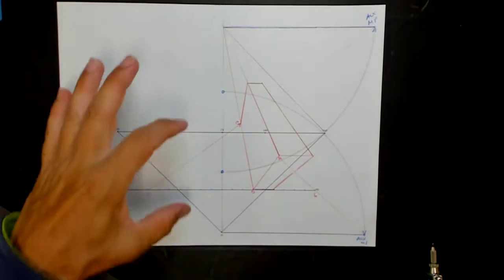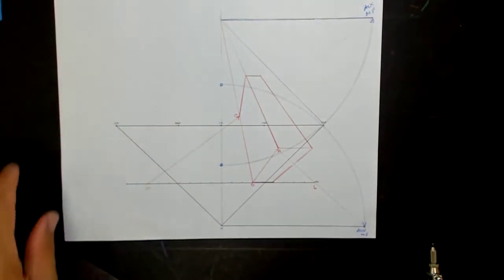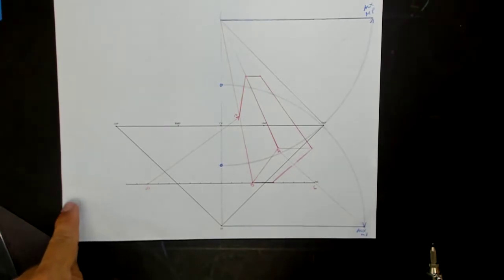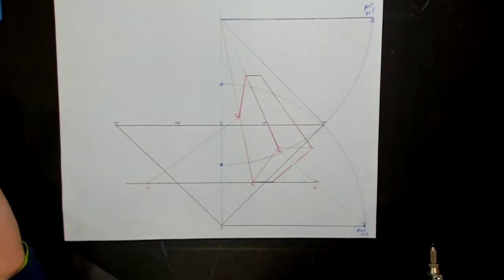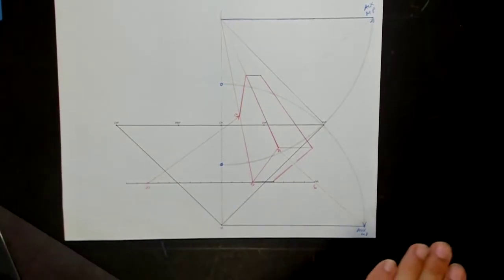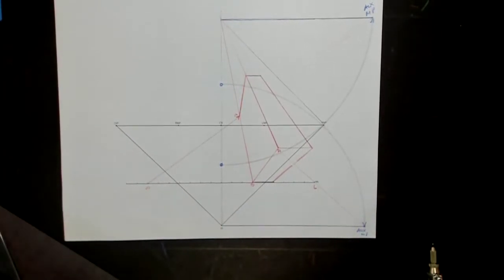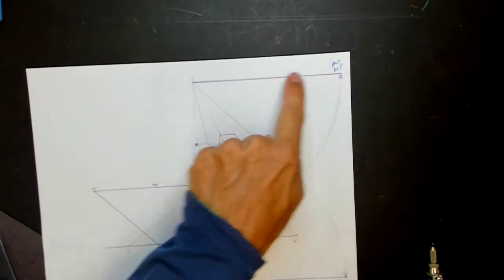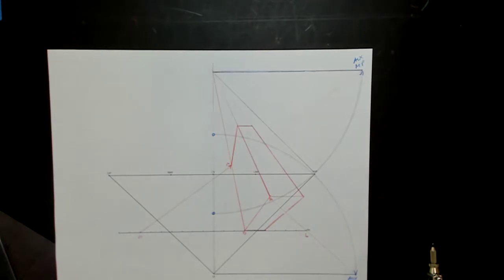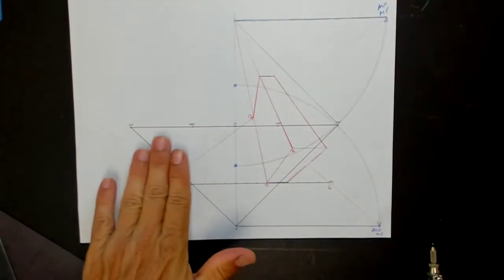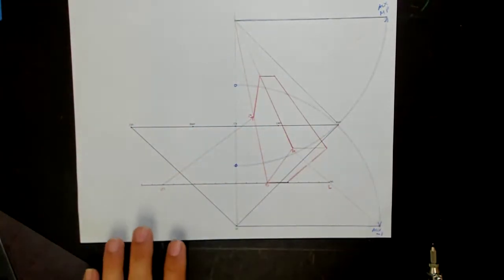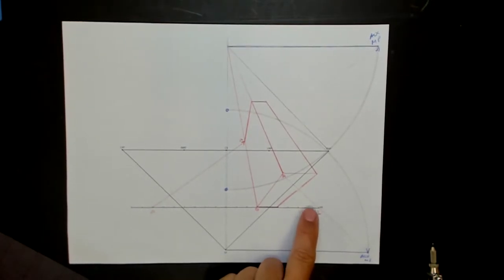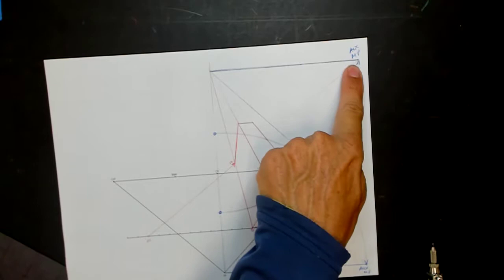But the problem with putting them here is when we set this diagram up, see our measuring line? We made it parallel to the horizon line, which that's what you usually do. It's setting on the ground and it's parallel, going right along the ground plane. That's why we put these up here on a horizontal line. We even called it an auxiliary horizon line because it acts kind of like this horizon line. If we wanted to use this measuring line, we have to put these on a horizontal line.